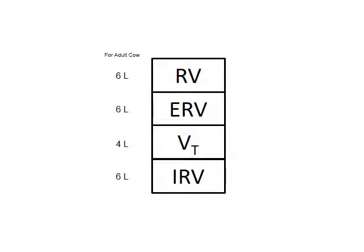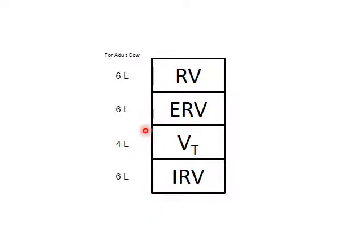Looking at an adult cow: the residual volume — as little as the lungs can get — is about six liters, or a gallon and a half. Tidal volume for an adult cow is about four liters, roughly a gallon, flowing in and out while they're just hanging around not doing much. As a cow gets into springtime and starts running around, they'll be out of shape and start using their inspiratory reserve, moving about 16 liters — four gallons — in and out.